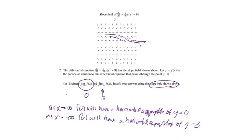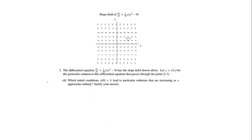This part is worth two points. If you said the limit approaching infinity is zero and gave a reason why, you got a point. And if you said the second one was 3 with a reason, you also got a point. So that was worth two points.